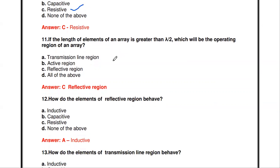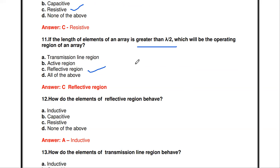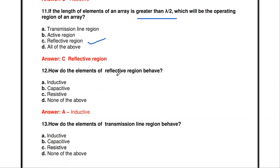If the length of the elements of an array is greater than lambda/2, which is the operating region? That is called the reflective region. In the reflective region the dipole element has length greater than lambda/2. In the active region the dipole length is approximately equal to lambda/2, and in the transmission line region the dipole length is less than lambda/2.